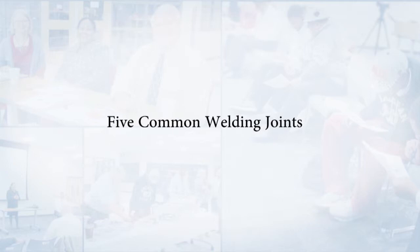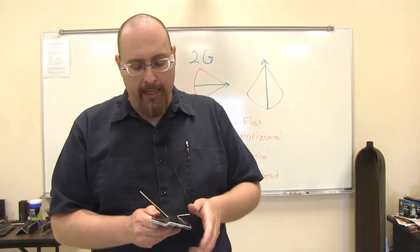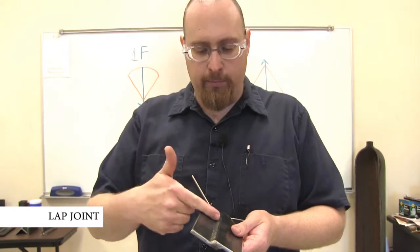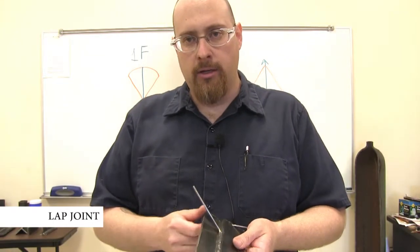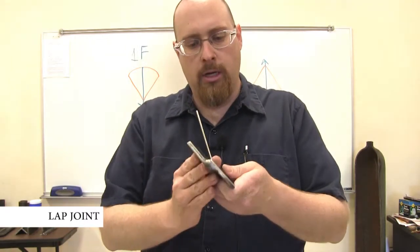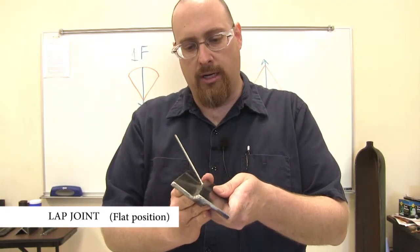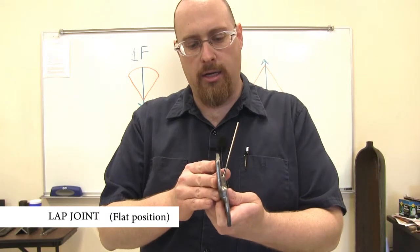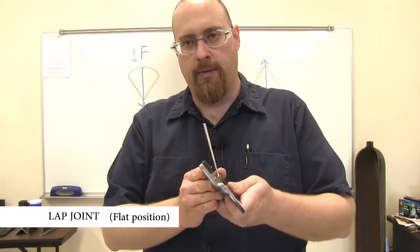I have little mock-ups of our five most common joints, and we're going to look at those and I'll show you what they each look like in each position. The first one we're going to look at is our lap joint, and if you look, this piece of metal is going to be where our electrode is pointing and it goes down through the center of the face and then out the root. So when my lap joint is sitting anywhere between here and here, that's flat.